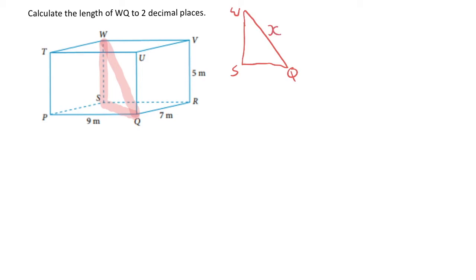I know that WS, because it forms one of the actual sides of the rectangular prism, is going to equal 5. And SQ, which doesn't form an actual side, is an unknown at this point. So I'm going to call it Y.